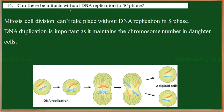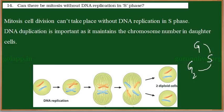Can there be mitosis without DNA replication in S phase? A cell cycle has different stages: a growth phase, G1, S phase, G2, M phase, and back to G phase again. This is called a cell cycle.